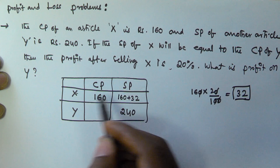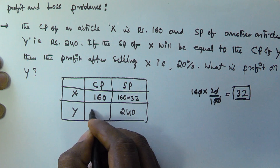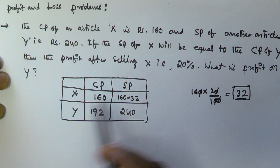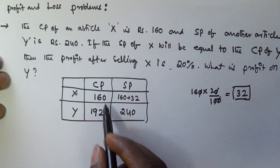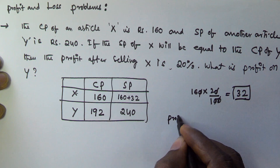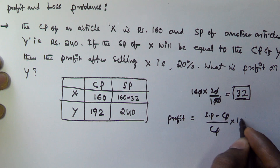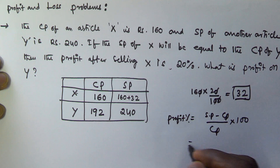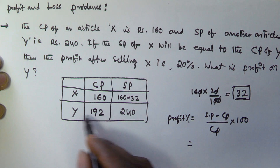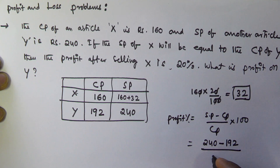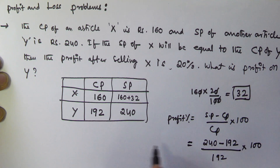Since the selling price of X is equal to the cost price of Y, the cost price of Y is 192 rupees. Now, the profit percentage formula is: (selling price − cost price) / cost price × 100. For article Y, the selling price is 240 and the cost price is 192, so it is (240 − 192) / 192 × 100.